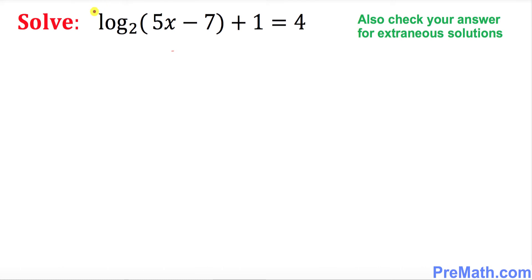Before we get started I want to make sure that we must have this logarithmic part being isolated. In order to do that I want to subtract one from both sides. So what is going to happen is this thing is gone, we got log of 5x minus 7 with a base 2 equals to 3.